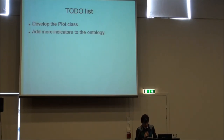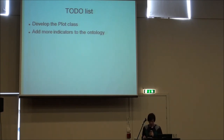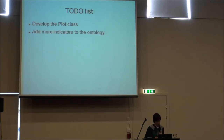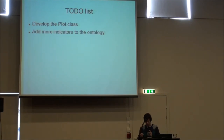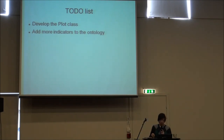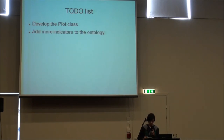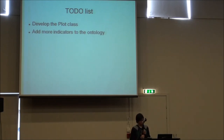Today there is a method to describe what an indicator is, but not how it is calculated. One of the next steps is to develop the block class in the ontology, so we can describe how to calculate a specific indicator. The other thing to do is to add more indicators to the ontology, so it would be richer and better.